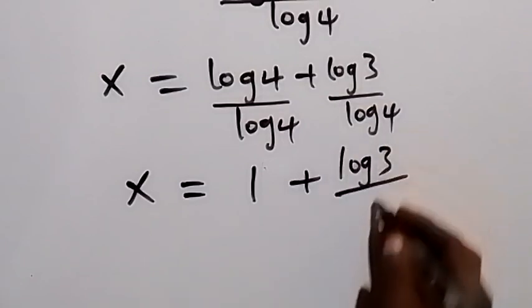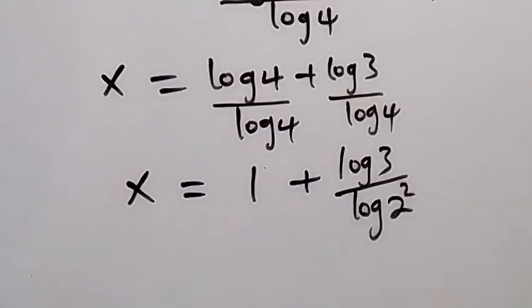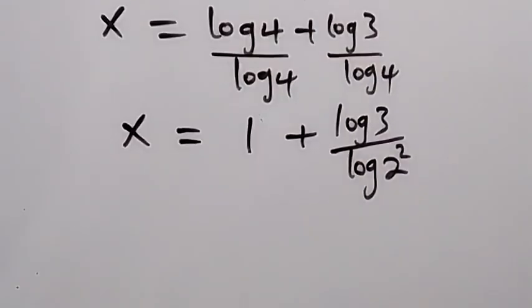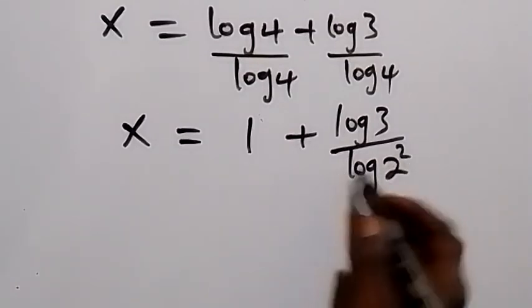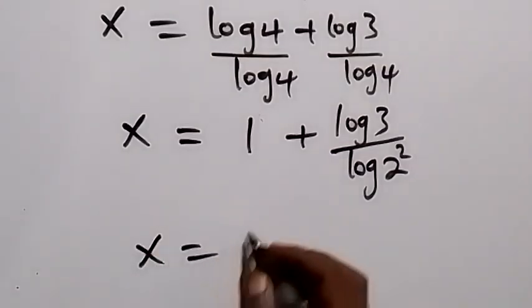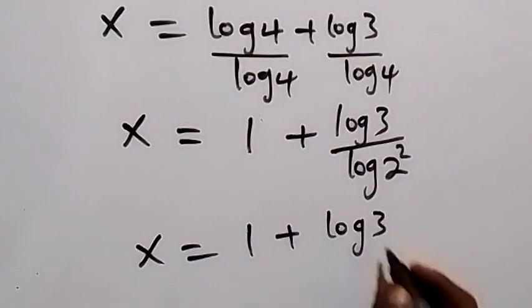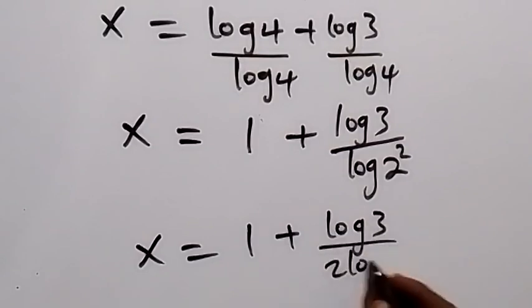Log 4 can be written as log 2 raised to power 2, because 2 raised to power 2 is 4. Then when we take 2 to the back from the power log, x will now be equals to 1 plus log 3 over 2 log 2.